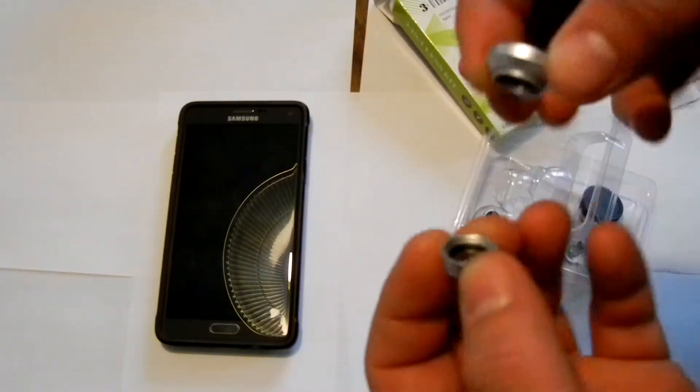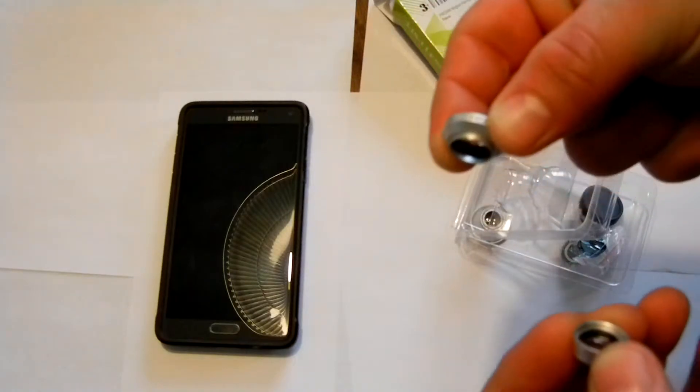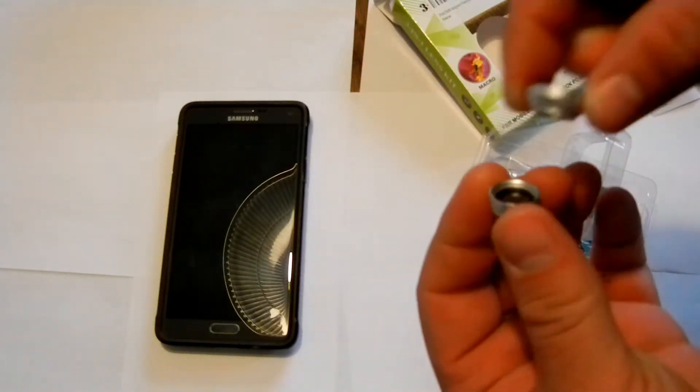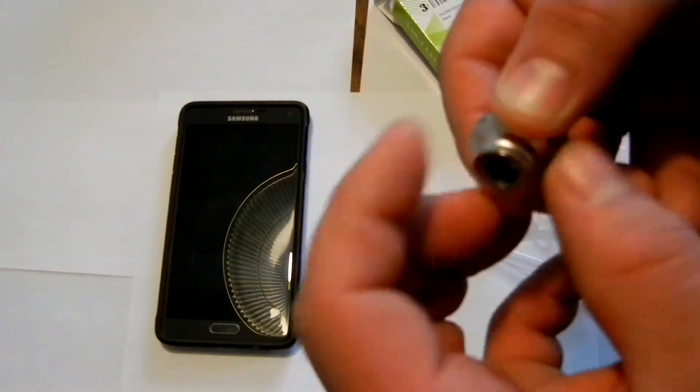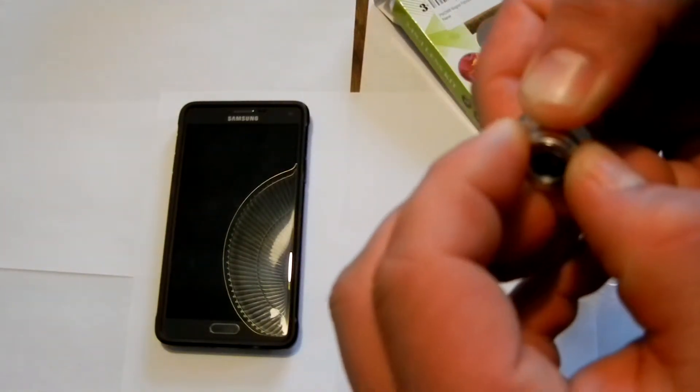that they got gypped. So, essentially, this is the wide angle portion, and it requires the macro portion to actually work. Now, I'm not using macro, as I said. I'm just going to be using the wide angle. So, I'll go ahead and screw this on.